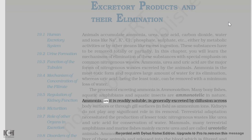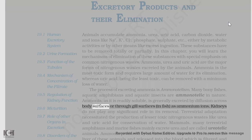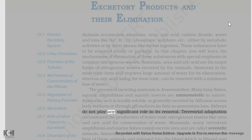Ammonia, as it is readily soluble, is generally excreted by diffusion across body surfaces or through gill surfaces in fish, as ammonium ions. Kidneys do not play any significant role in its removal.